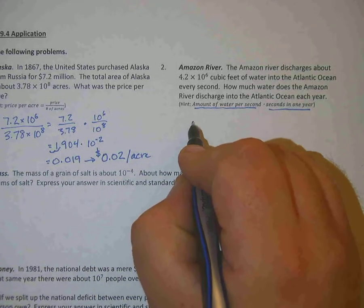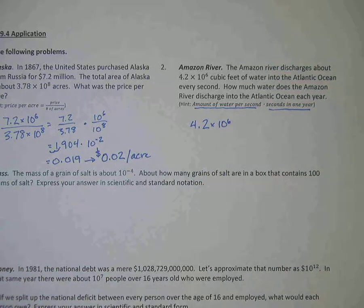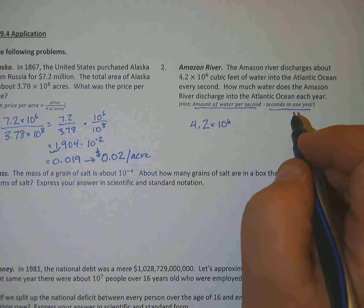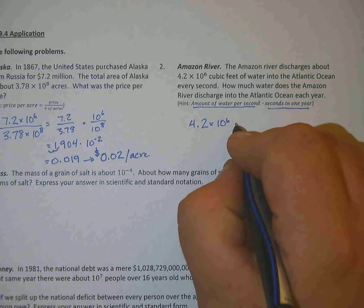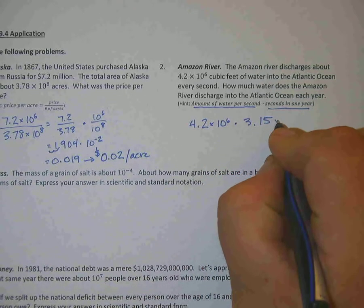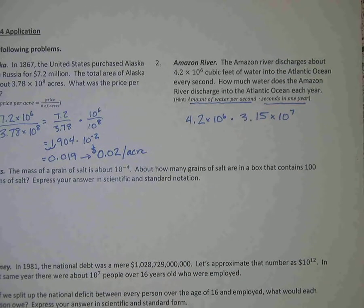So you're going to have 4.2 times 10 to the 6th. So that's the water per second. And then the number of seconds in a year, I'll go ahead and give you that in scientific notation. Just call it 3.15 times 10 to the 7th power. If you were able to figure that out on your own, good job.